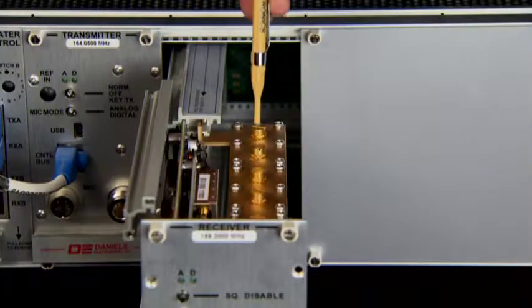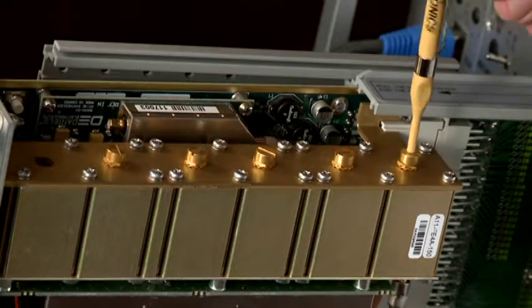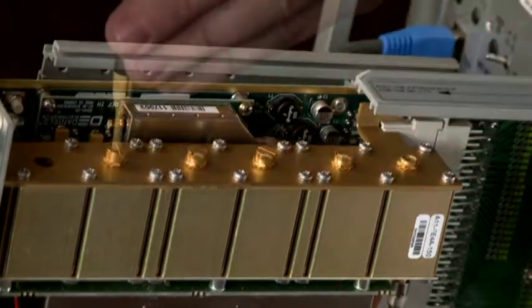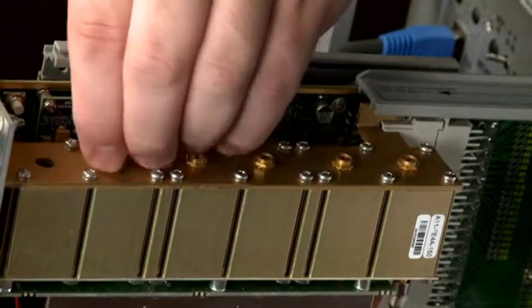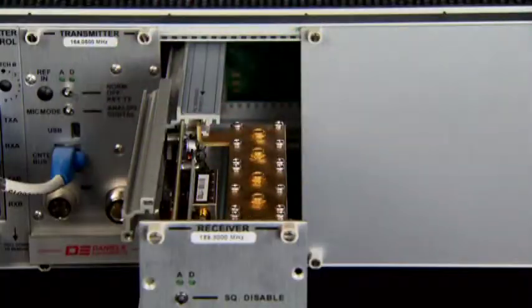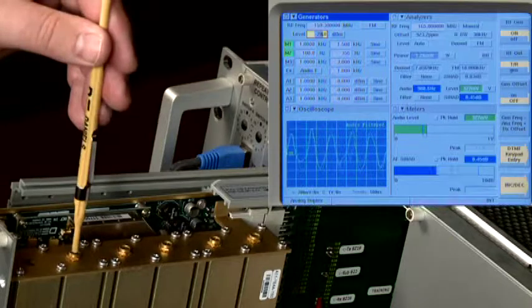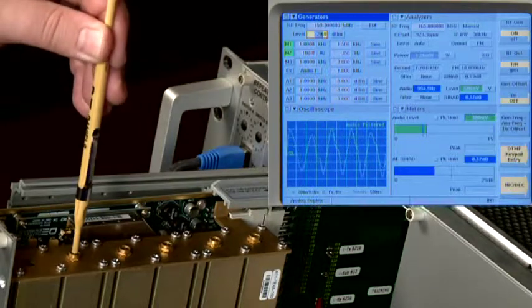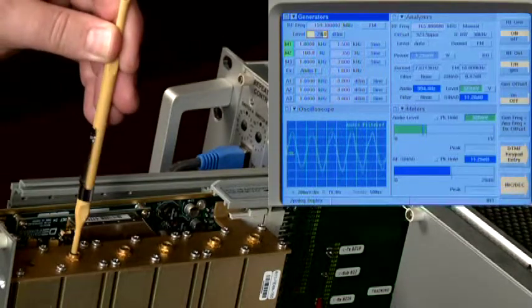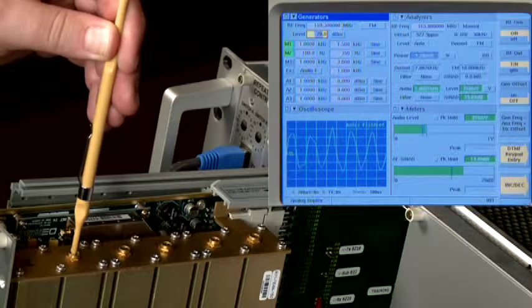Remove the five dust caps from the variable capacitors on the RF preselector. Adjust the variable capacitors to tune the RF preselector. Set the signal generator so that noise can be heard on the speaker, then tune the capacitors for the best SINAD measurement.